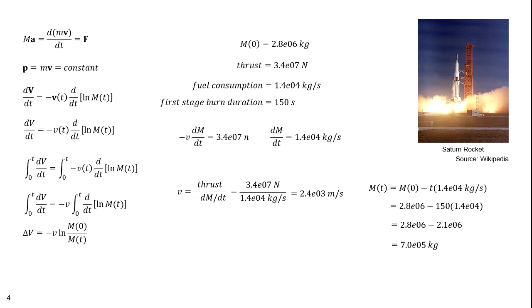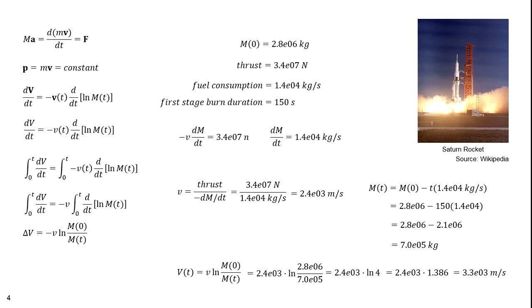The rocket lost three-quarters of its weight. The velocity at the end of the first stage is v times ln(m(0)/m(t)), which equals 2.4×10³ times ln(2.8×10⁶ / 7.0×10⁵). Since 2.8/0.7 = 4, this equals 2.4×10³ times ln(4), which is 2.4×10³ times 1.386, giving 3.3×10³ meters per second. The actual velocity was 2.8×10³ m/s, accounting for air resistance and gravity. The velocity we computed would be as if the rocket were accelerating in space.